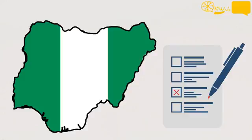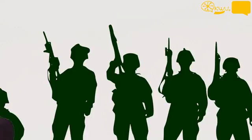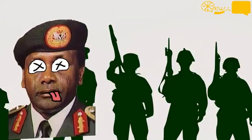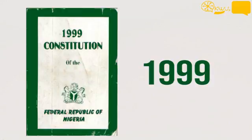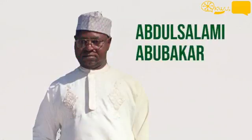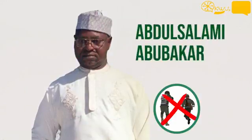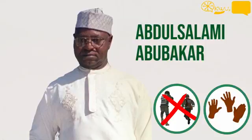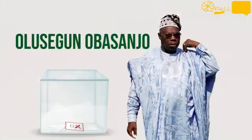Democracy returned to Nigeria after the death of military dictator General Sani Abacha. A year after, in 1999, General Abdusalam Abubakar terminated military rule and handed over power to the newly elected civilian president Olusegun Obasanjo.